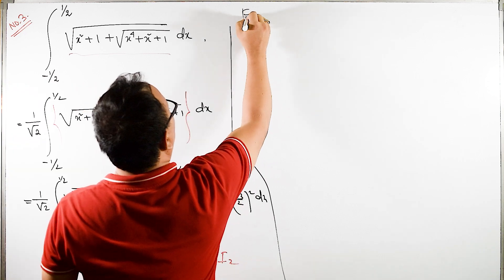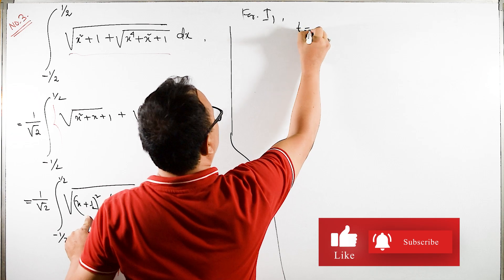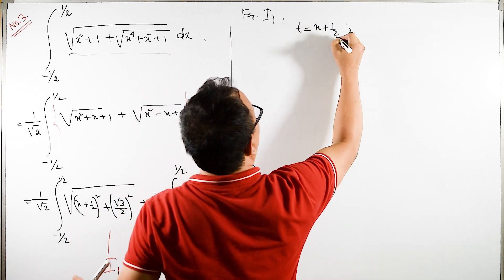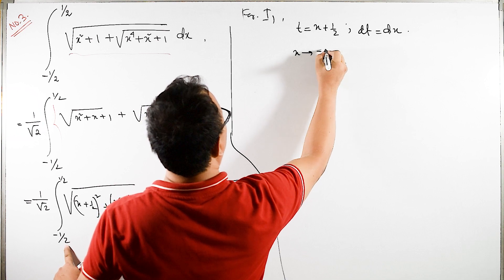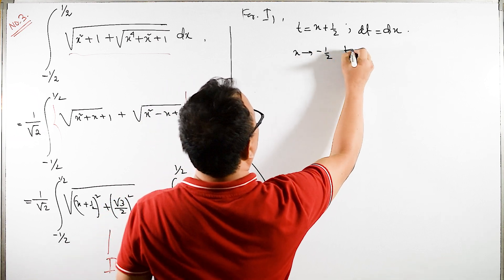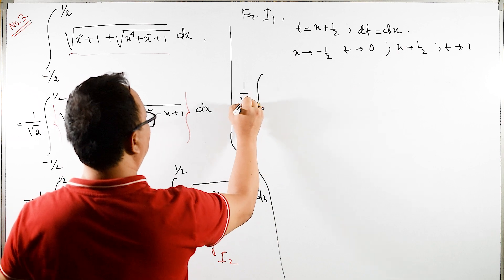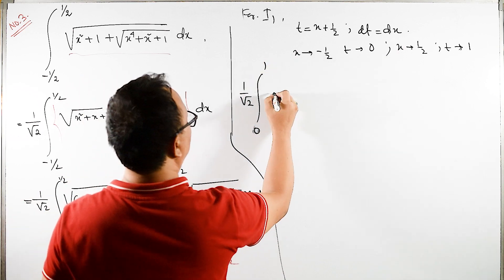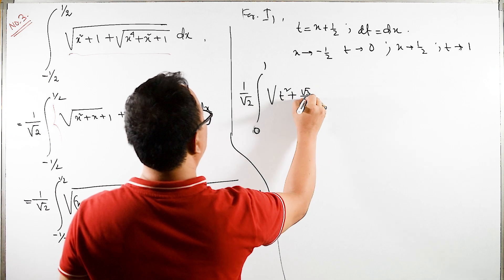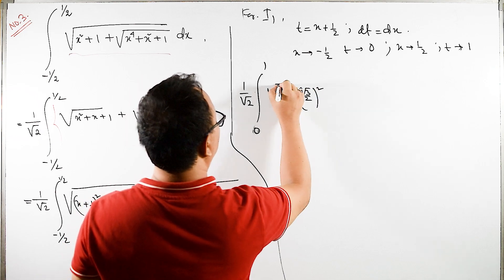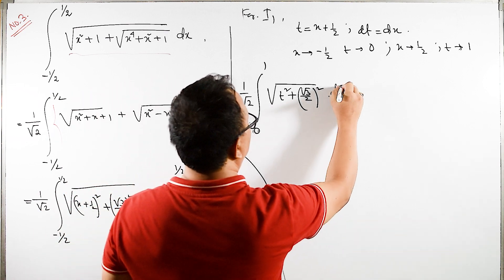For I1, let t equals x + 1/2, then dt equals dx. When x tends to -1/2, t tends to 0; when x tends to 1/2, t tends to 1. So I1 equals (1/√2)·∫ from 0 to 1 of √(t² + (√3/2)²) dt.